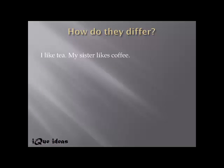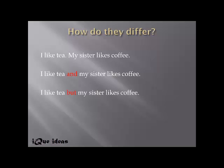Now how do they differ? Here are two simple individual sentences: 'I like tea. My sister likes coffee.' But if I join them using 'and': 'I like tea and my sister likes coffee.' Using 'and' merely joins two individual ideas — that I like tea and my sister likes coffee. This expresses two facts without any contrast.